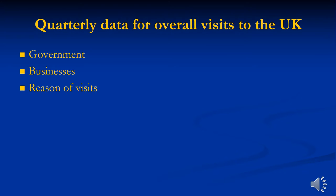The first dataset is quarterly data for overall visits to the UK. This data is important for government and also businesses to find out the reason why people are traveling to the UK, in order to improve the situation and attract more people to visit the UK.